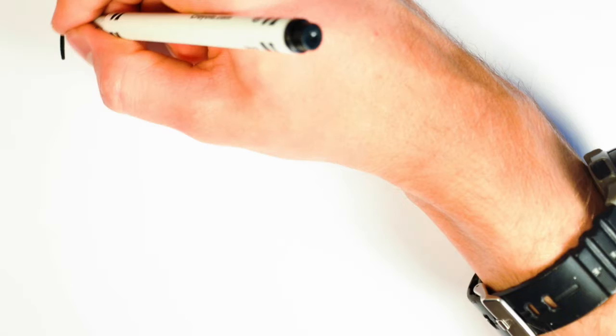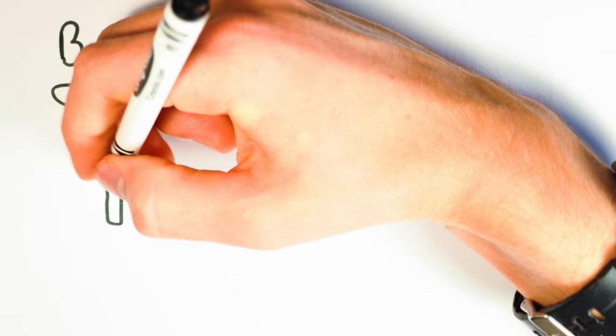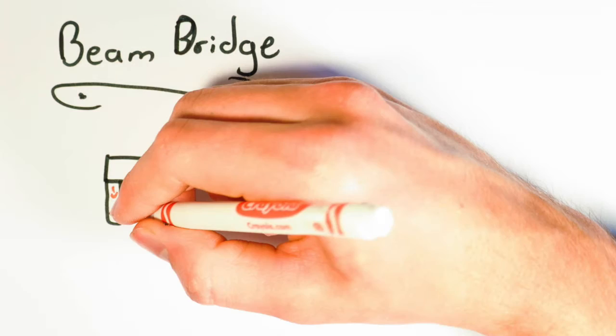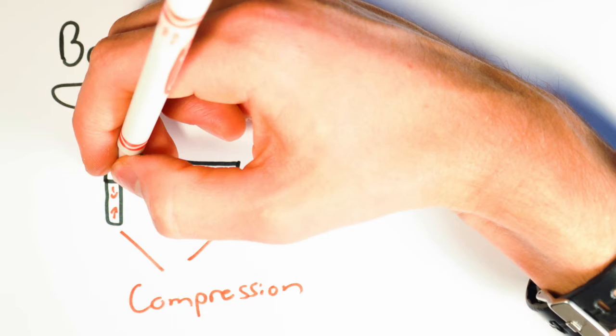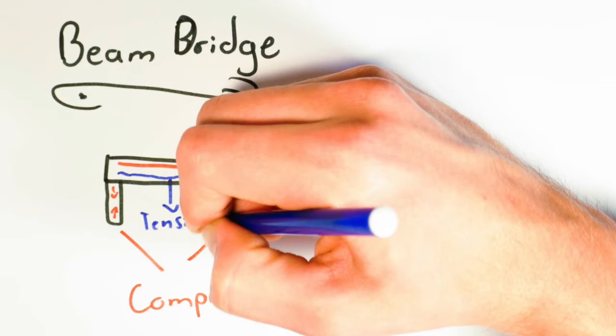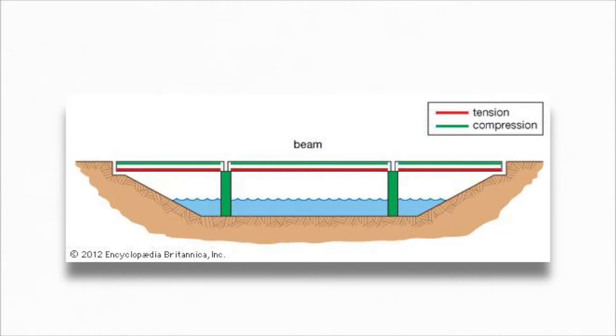In order to build a beam bridge, also known as a girder bridge, all you need is a rigid horizontal structure, a beam, and two supports, one at each end to rest it on. These components directly support the downward weight of the bridge and any traffic traveling over it. However, in supporting the weight, the beam bridge endures both compressional and tension stress.